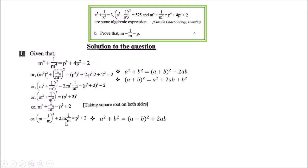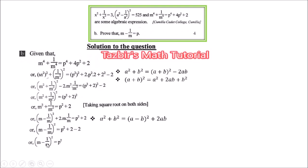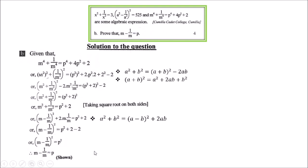Simplifying further: +2 on the left transfers to the right as -2, so it is removed. Finally, (m - 1/m)² = p². Taking the square root on both sides gives m - 1/m = p. Hence shown/proved.